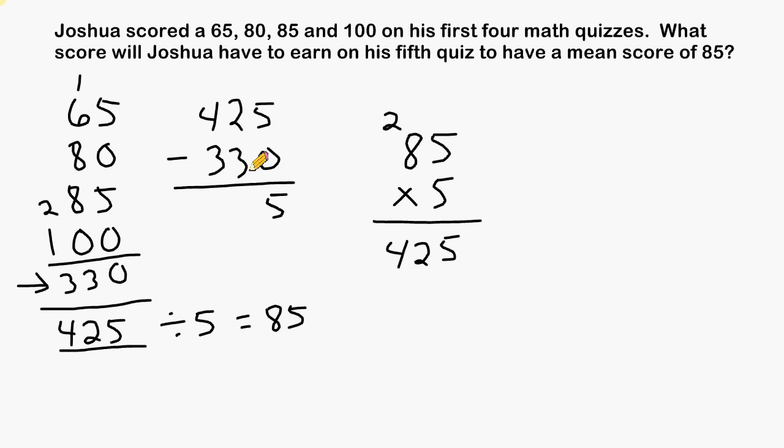This will be a 5. This will be a 9. Of course we had to borrow from this 4, so we have nothing left in this column. So we can see that the fifth score that Joshua must earn to have an average of 85 must be a 95.